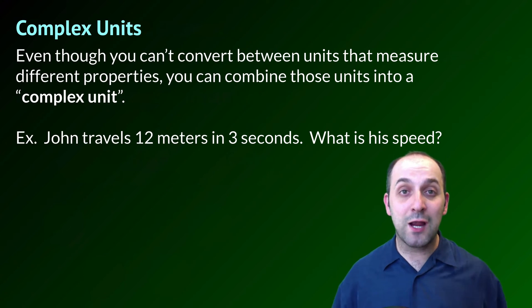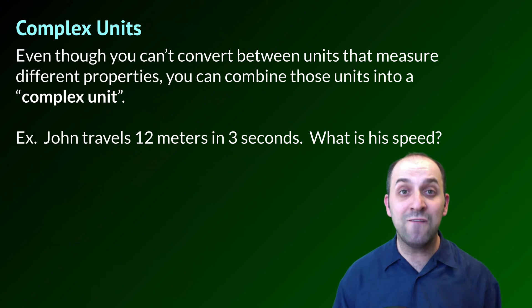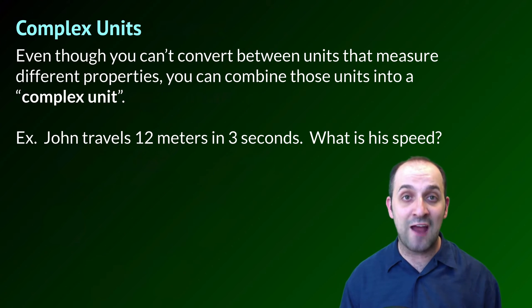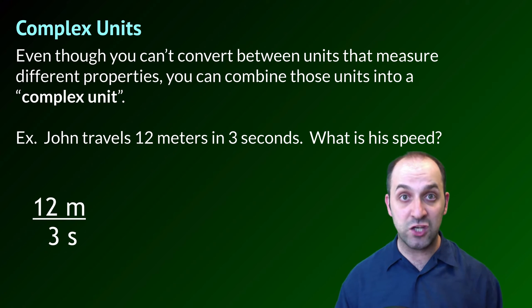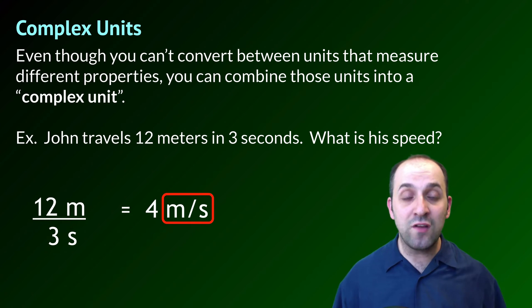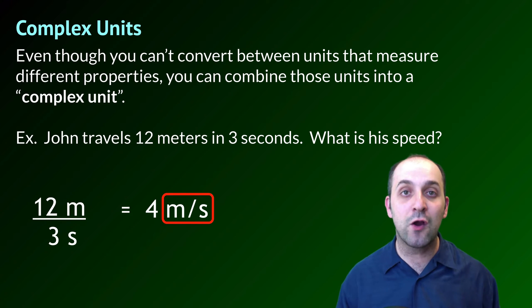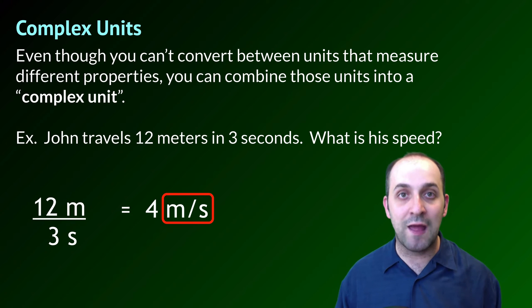That doesn't mean you cannot combine base units into more complex units. For instance, if John travels 12 meters in 3 seconds, we can figure out his speed expressed as meters per second. We divide 12 meters by 3 seconds to determine that John is moving 4 meters per second. These two units have been combined into a more complex unit — something you'll see all over the place in chemistry. Some complex units are used so often that they are given their own names as shorthand.